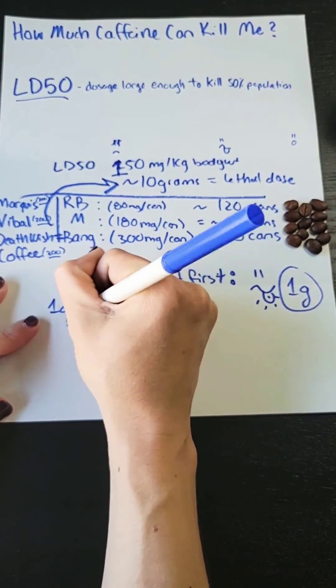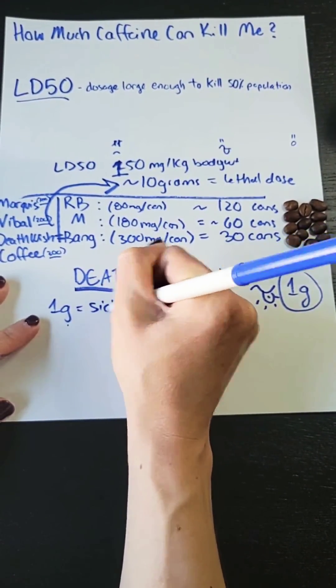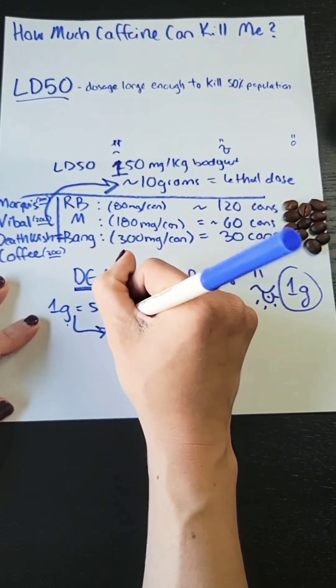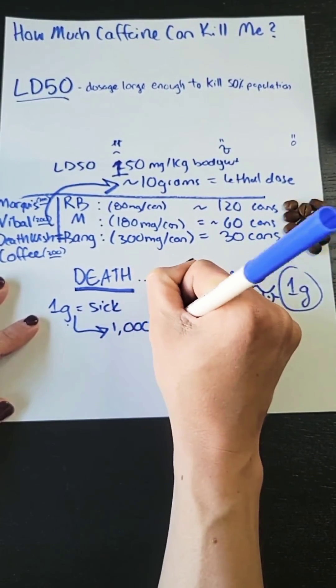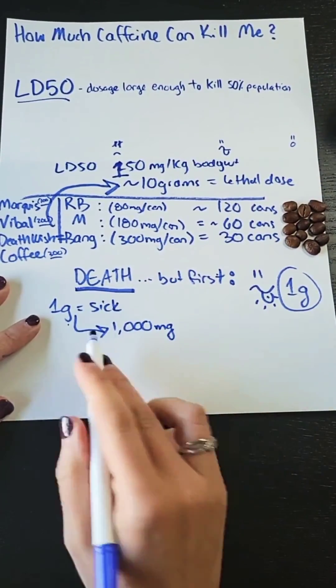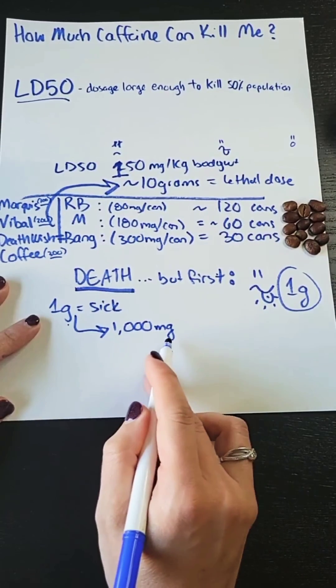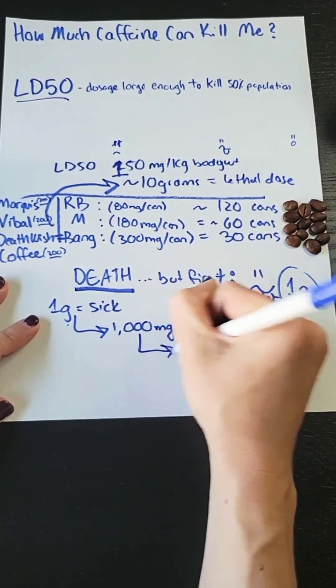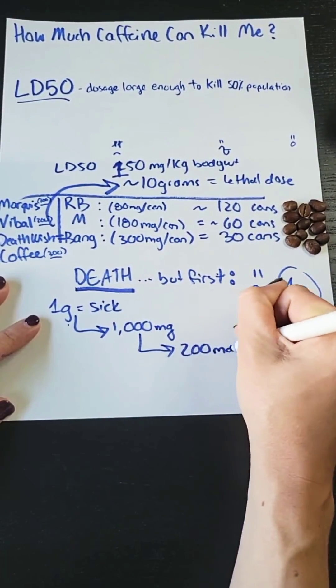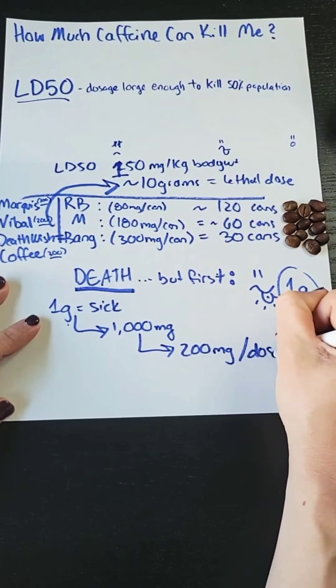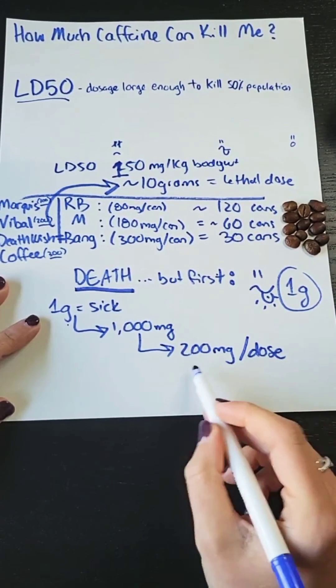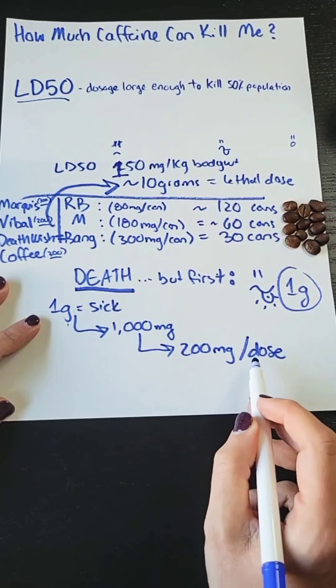So essentially, if one gram is enough to feel sick, then for those of you who aren't familiar, this is one thousand milligrams. But it's only 200 milligrams that you're recommended to have at one dose. This is the max an adult can have at one time.